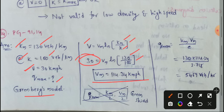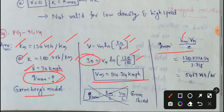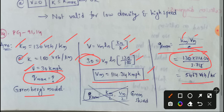Now I will calculate Q_maximum, the maximum volume. In Greenberg's Model the formula is: Q_max equals k_max times V_max divided by e. So, 130 multiplied by 114.34, divided by e (2.718). Simplifying this gives us 5469 vehicles per hour, which is the maximum volume or maximum flow.